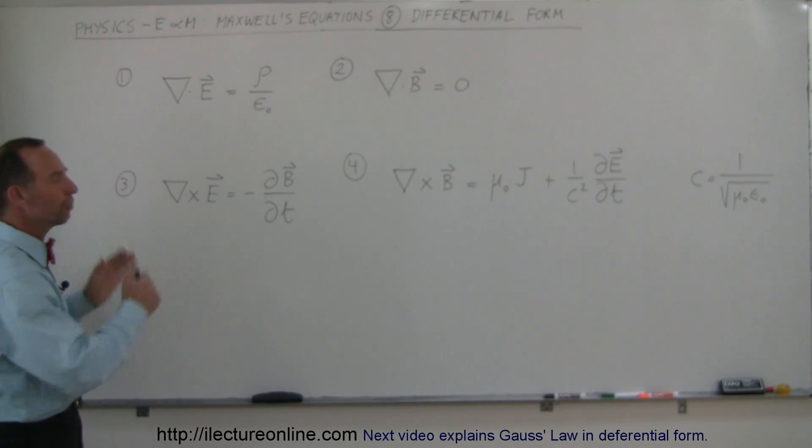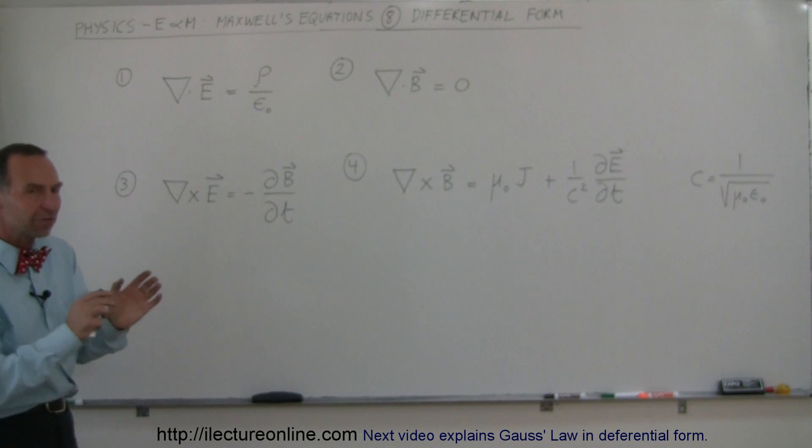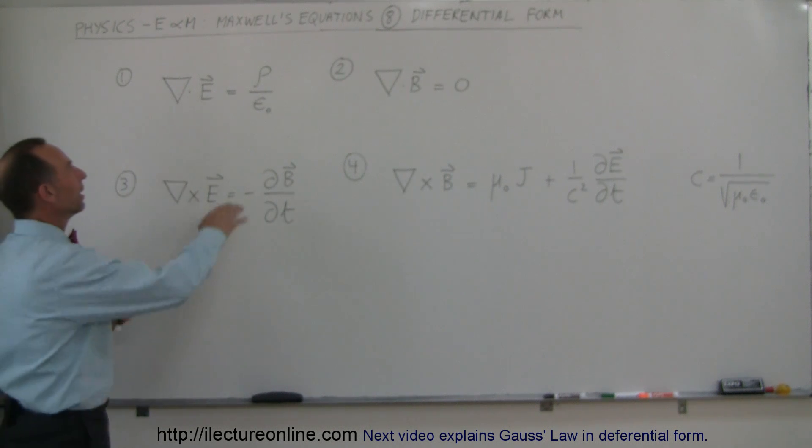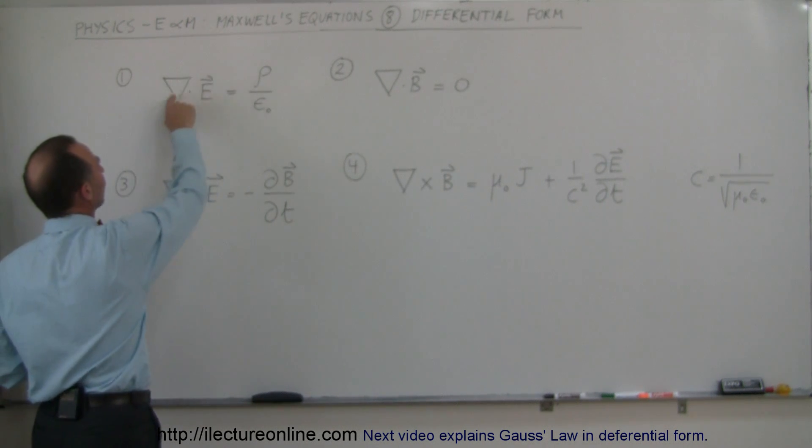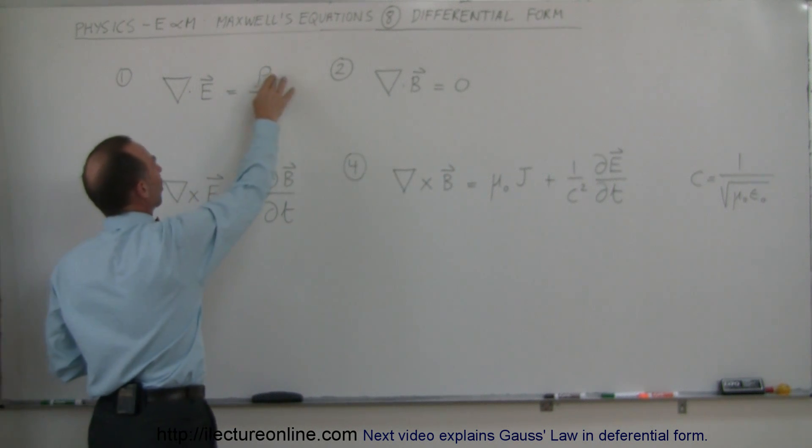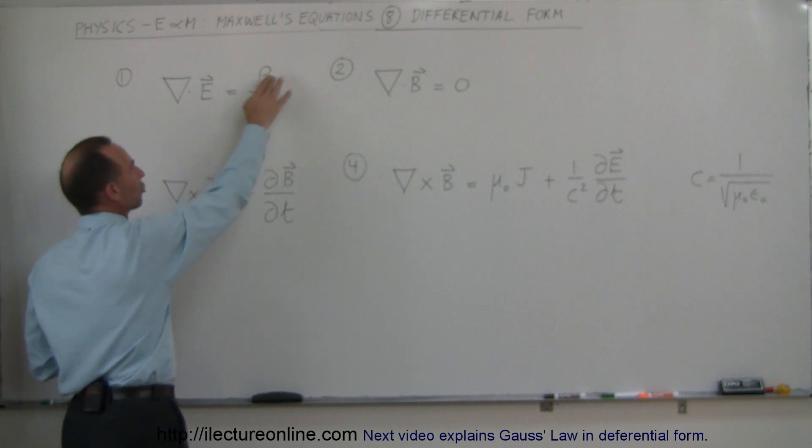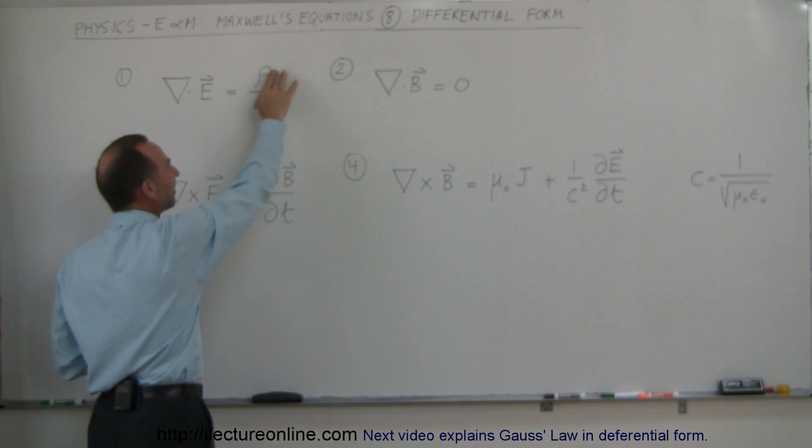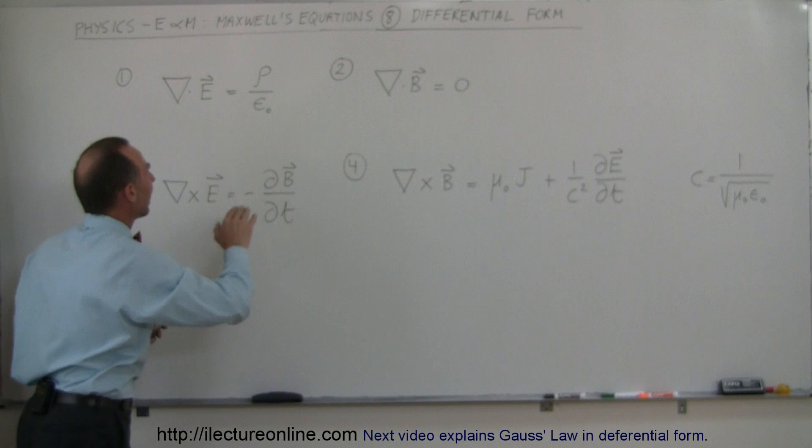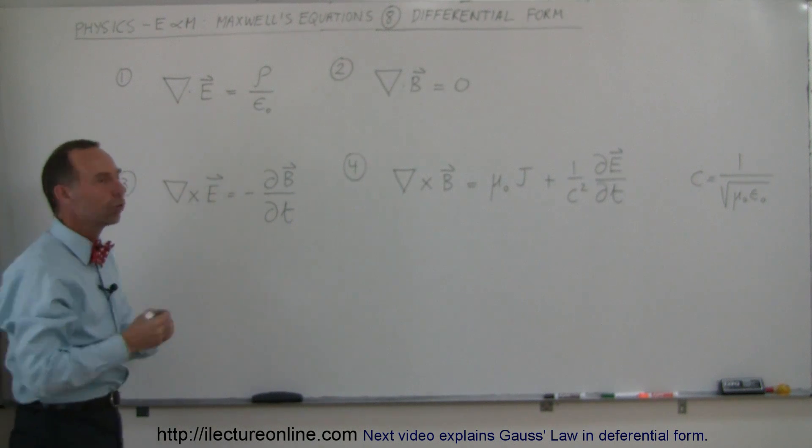You can see that they're still the same four equations and in some respects you see some similarity. Here remember that we had the surface integral of E dot dA that was going to be equal to the charge enclosed divided by epsilon sub nought. So here instead of having charge enclosed we have charge density divided by epsilon sub nought and here we have what we call the divergence of E.